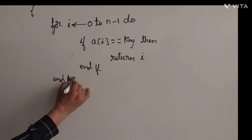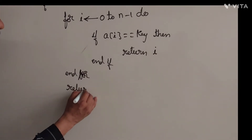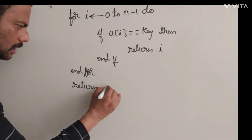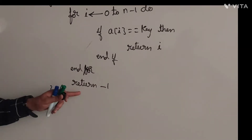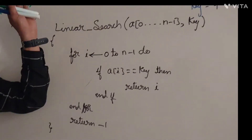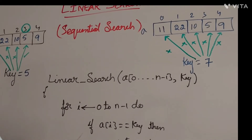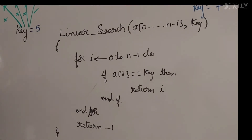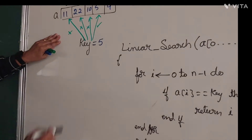After the for loop, if we still have not found the key, we return minus one. Returning minus one indicates the given key element is not present in the given list of elements. Now let us trace this algorithm.